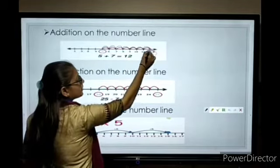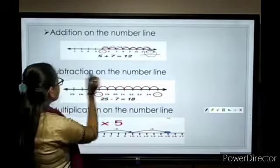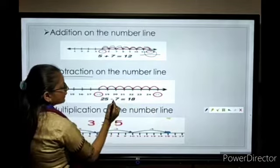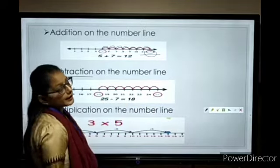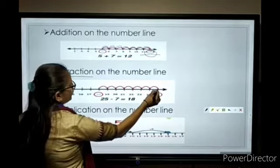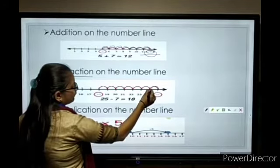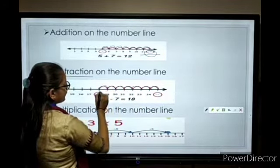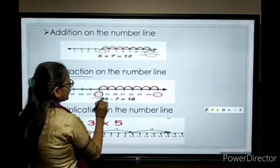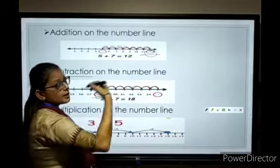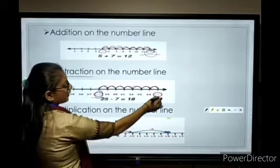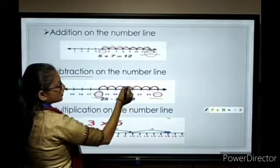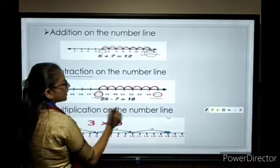So how do we count on the number line? If we do subtraction then we need to count 1, 2, 3, 4, 5, 6, 7, 8 to get the answer.